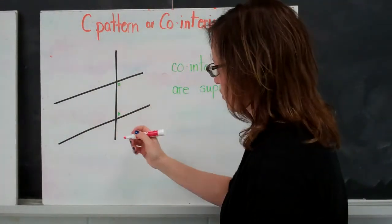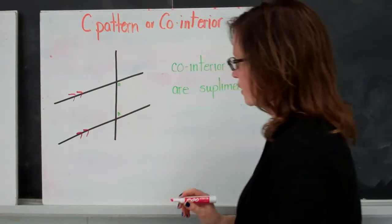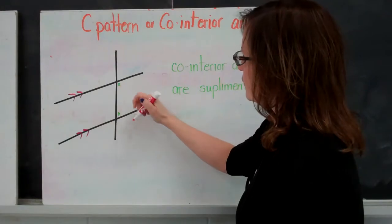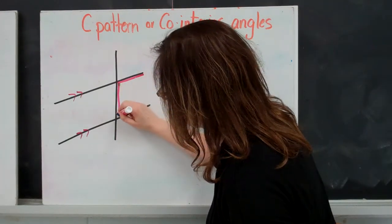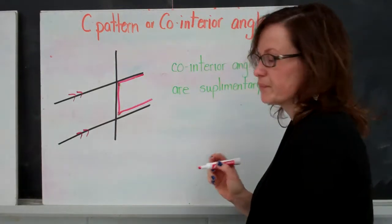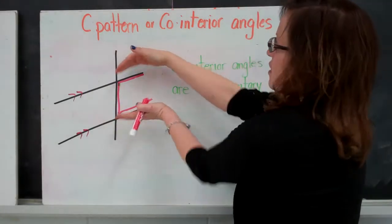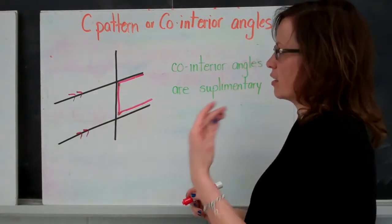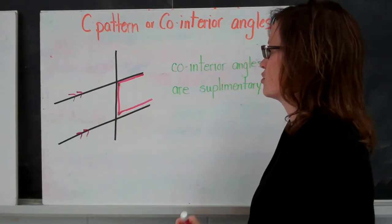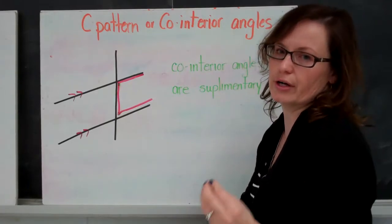And we have the C pattern. We have parallel lines, and if we look, we also can see a C. The angles that are within the C are the co-interior - they're kind of inside the C shape. They are supplementary. If we think about our last video, we know that supplementary means those two angles added together will equal 180 degrees.